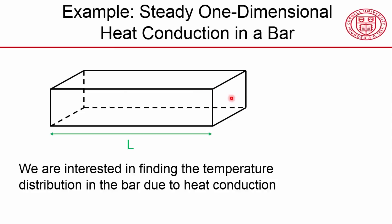One-dimensional means the temperature for any cross-section is the same — there's no variation across the cross-section. With a coordinate system where x is the axial direction and y and z are the transverse directions, temperature will vary only in the x direction and won't depend on y or z. Once I find the temperature at any point in the cross-section, I know the temperature anywhere in it. These simplifications keep the details to a minimum as we focus on the big ideas.